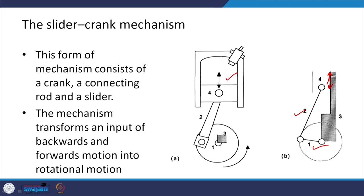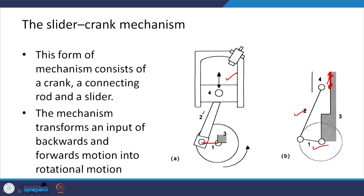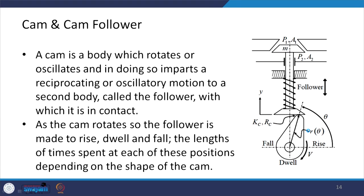In the slider-crank mechanism, the slider, crank, and connecting rod are clearly identified. The advantage of this mechanism is that it transforms a back-and-forth (linear) input motion into rotary motion.